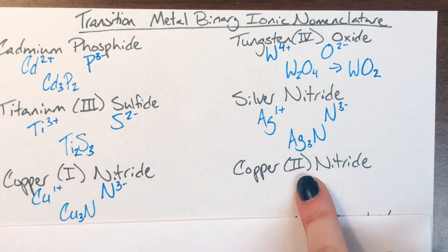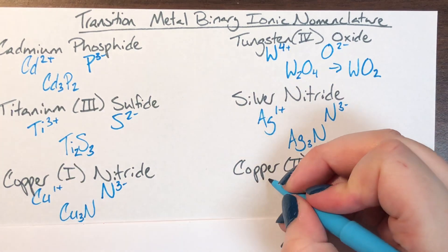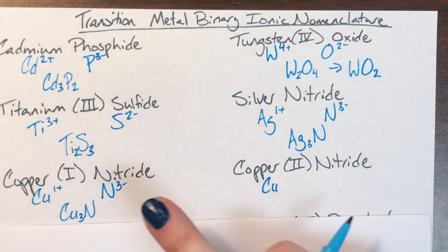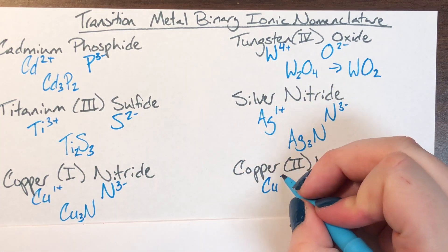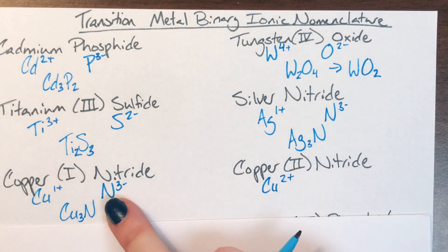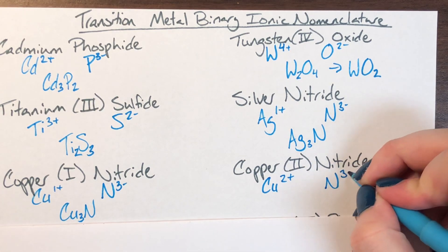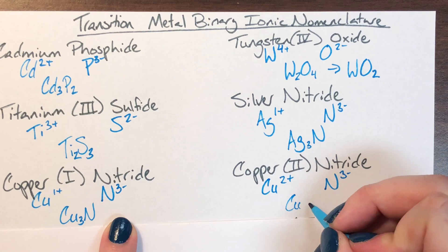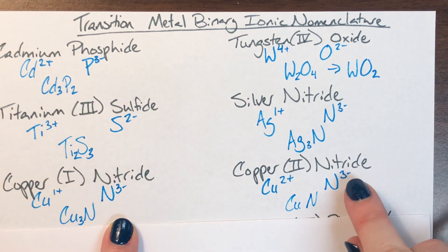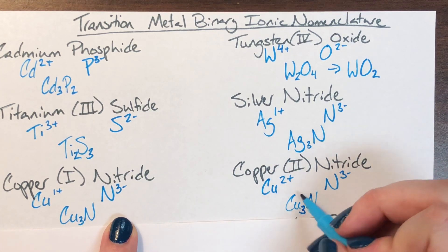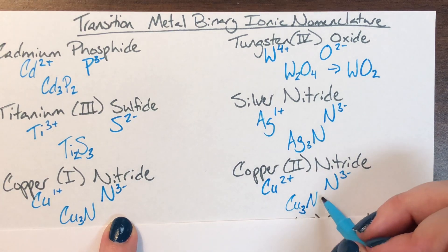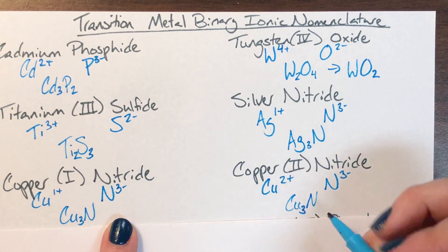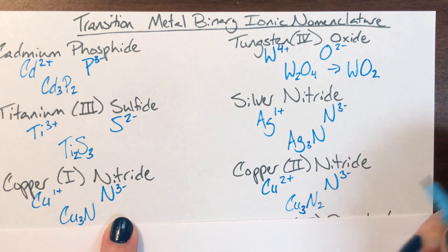Copper 2 nitride. Now we're seeing different types of ions — copper can form at least 2 different ions. Copper 1 had a charge of 1; copper 2 has a charge of 2. I'll pull nitride's charge of negative 3 from the previous problem and smoosh them together. Copper's subscript comes from nitrogen's charge of 3, so copper's subscript is 3. Nitrogen's subscript comes from copper's charge of 2, so nitrogen's subscript is 2. The formula is Cu₃N₂.